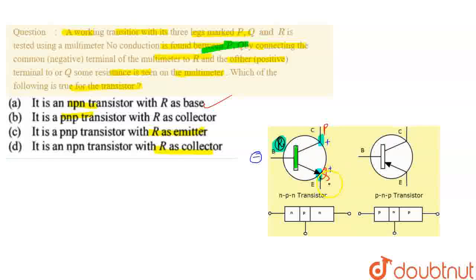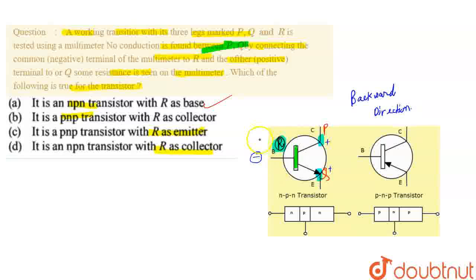यहाँ पर resistance तब मिलेगा जब यह backward direction में हो। So in backward direction, negative terminal is connected to base R, and positive terminal is connected to P and Q.